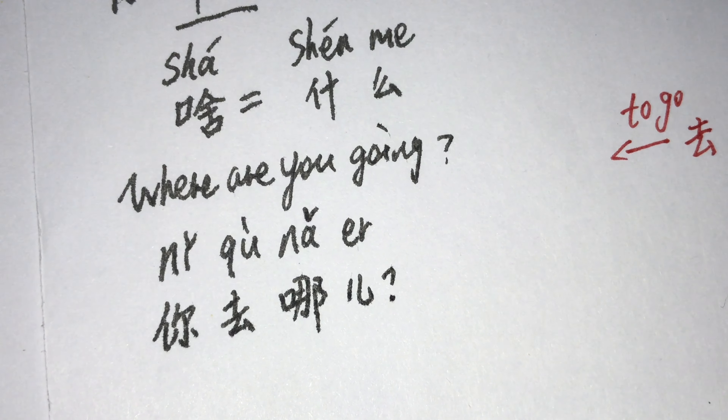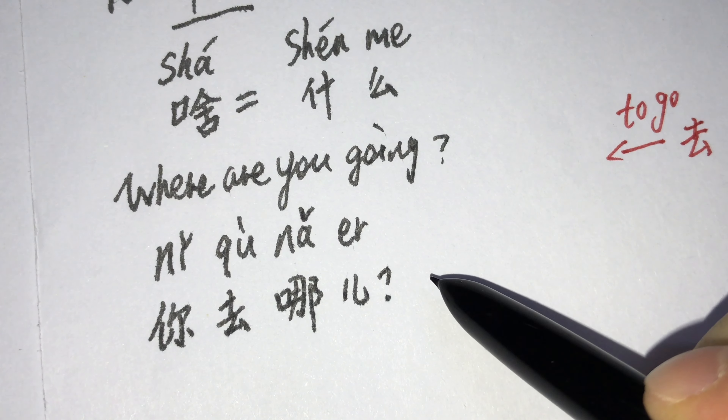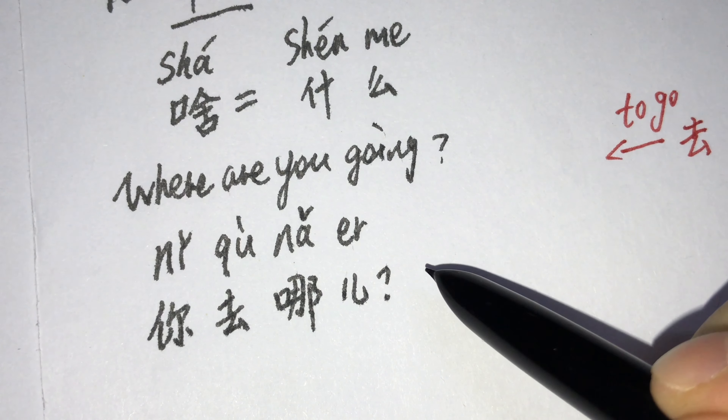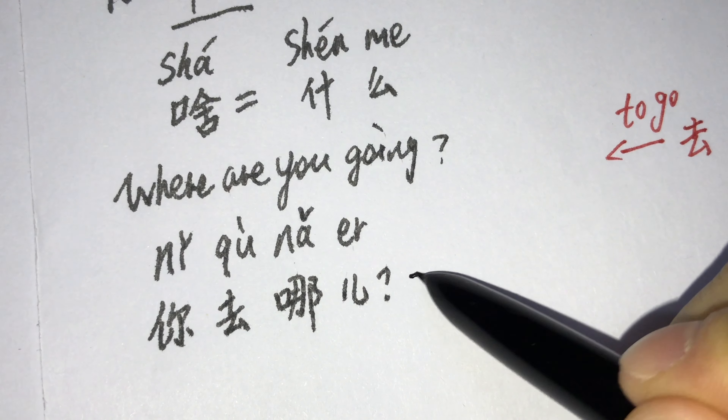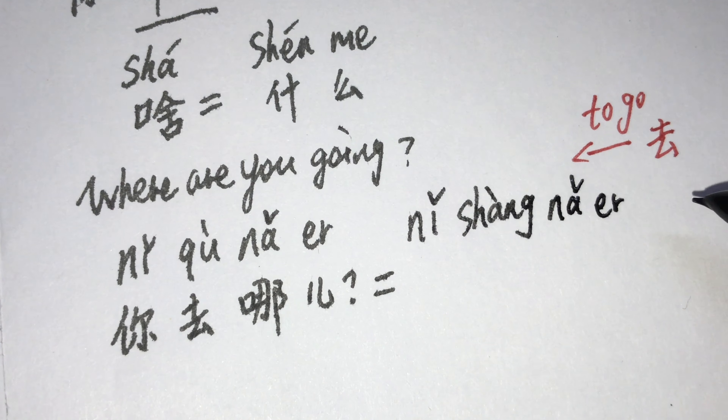去哪? A native way to speak 你去哪儿 is 你上哪儿去. More popular used in north of China. 你上哪儿去. 上哪儿去?